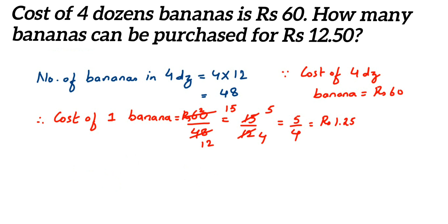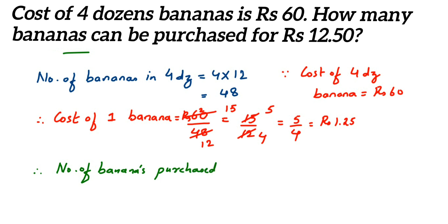Similarly, I have to find out how many bananas I can purchase for 12 rupees 50 paise, and the cost of one banana is 1 rupee 25 paise. To get how many bananas we can purchase, we divide these two numbers. Therefore, number of bananas purchased for rupees 12.50 will be equal to 12.50 divided by 1.25.